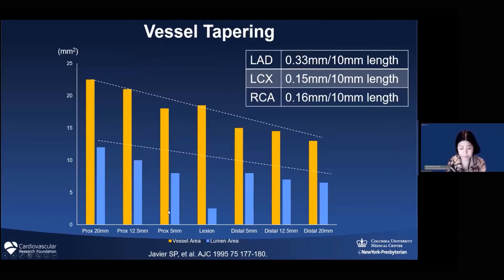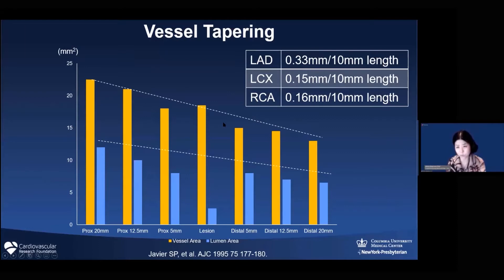There's a very old paper describing how vessel tapering looks. Tapering is most prominent in the LAD—typically 0.33mm per 10 millimeters. Circumflex and right coronary are about half that. So if you implant a stent in the proximal LAD starting at 4.0mm, a 30-millimeter stent distally should have a reference of 3.0mm.